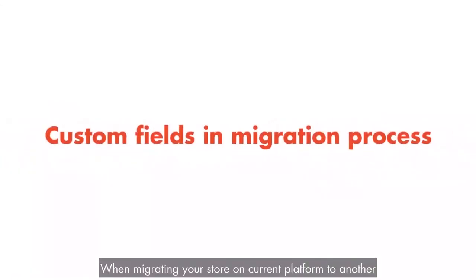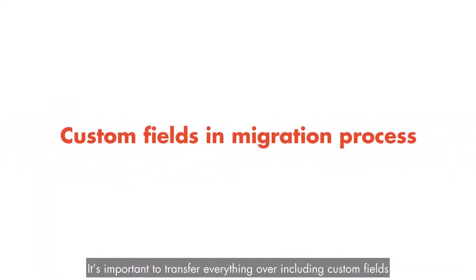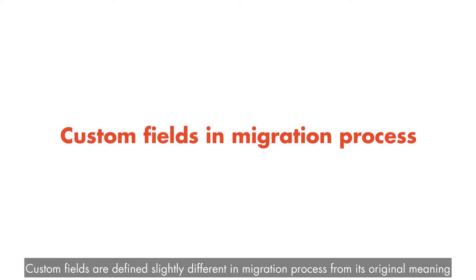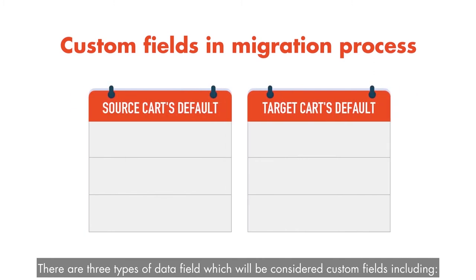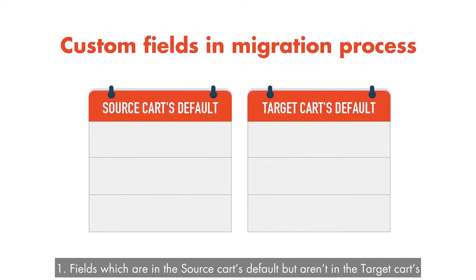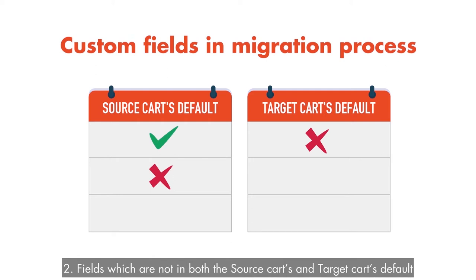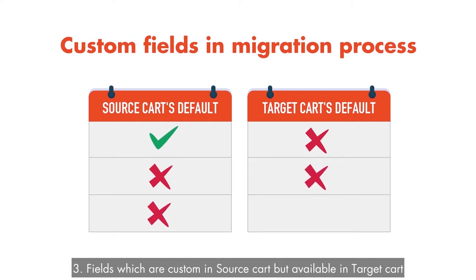When migrating your store on a current platform to another, it's important to transfer everything over, including custom fields. Custom fields are defined slightly differently in the migration process from their original meaning. There are three types of data fields which will be considered custom fields: fields which are in the source cart's default but aren't in the target cart's default; fields which aren't in both the source cart's and the target cart's default; and fields which are custom in the source cart but available in the target cart.